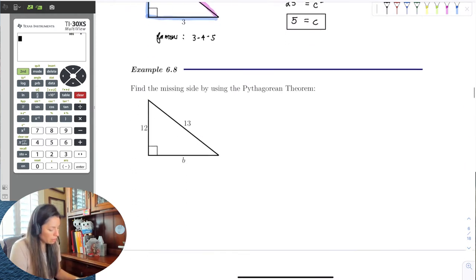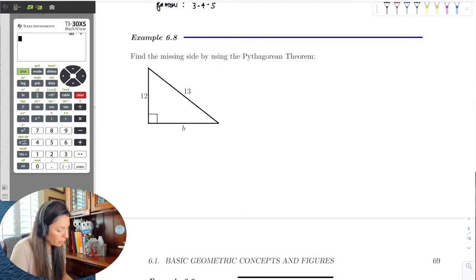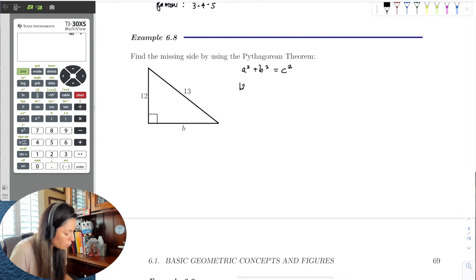So here, if I have the Pythagorean theorem, it's going to be the same formula, but remember that we have the two legs. So 12 squared plus B squared is equal to 13 squared.